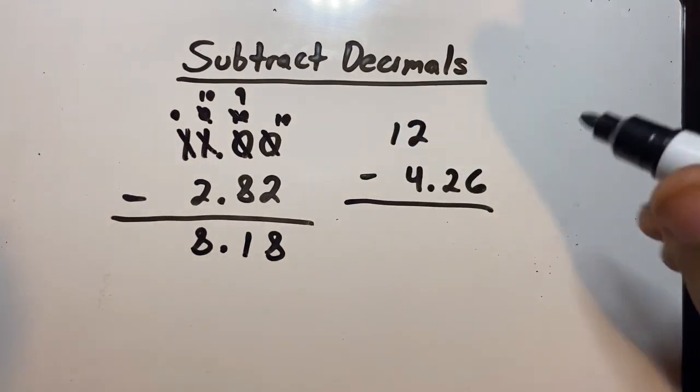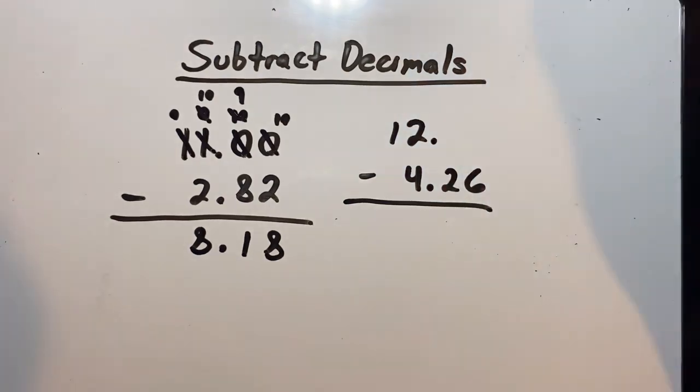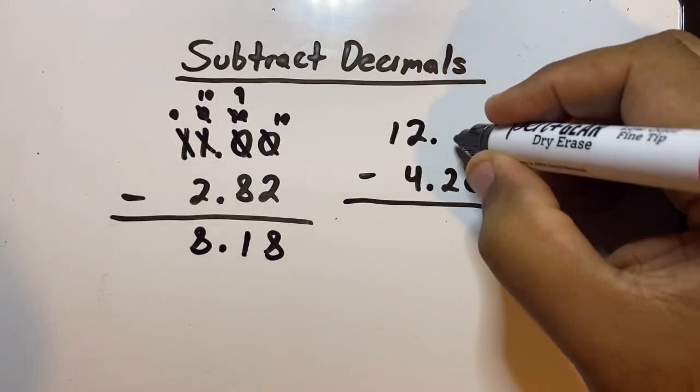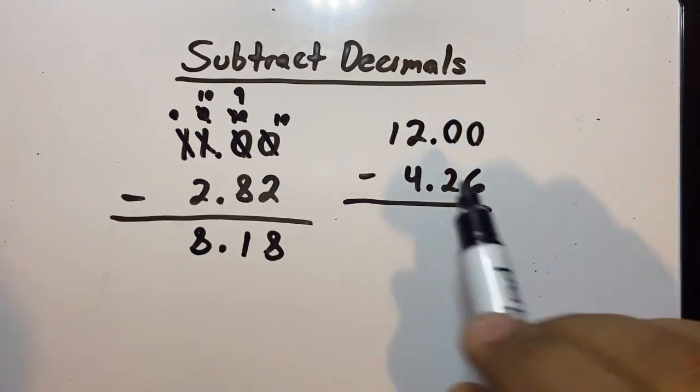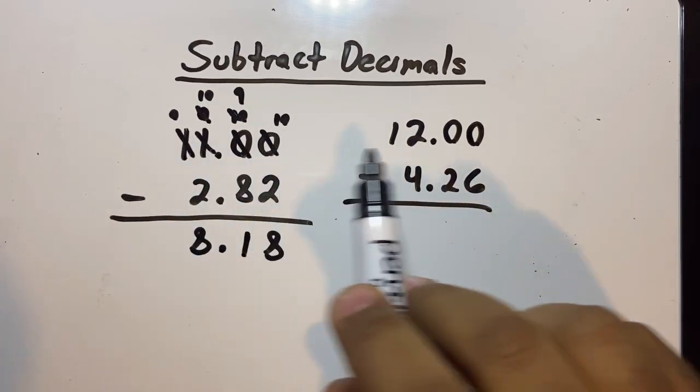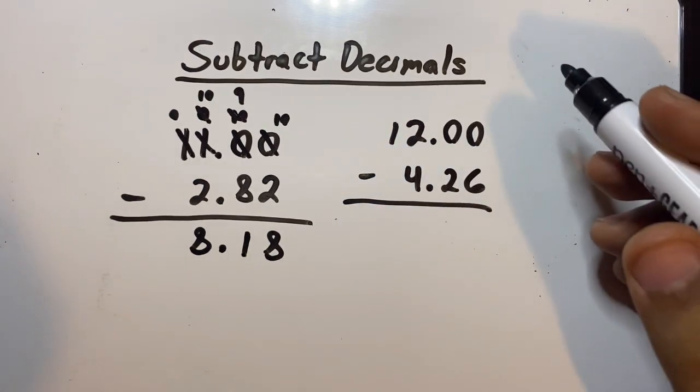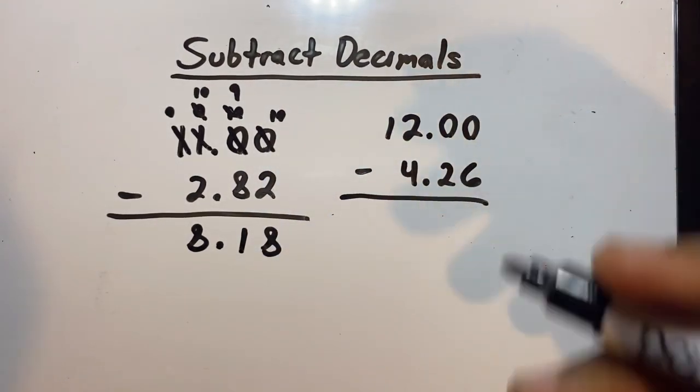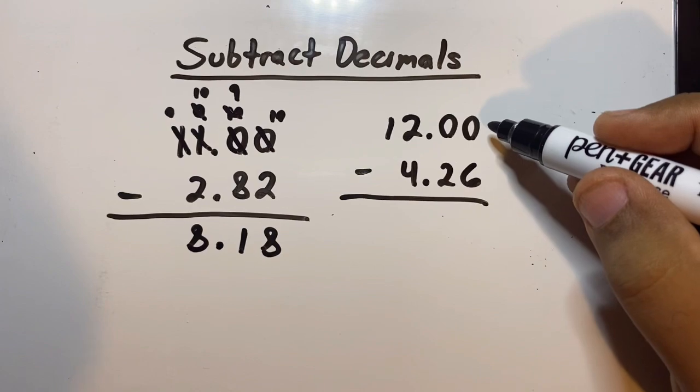If it is just a whole number, that means the decimal point is right here at the end of it, and then you just add the two zeros. You see how it's similar to this one? The only difference is I added the decimal point myself.